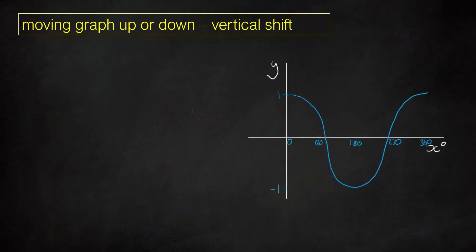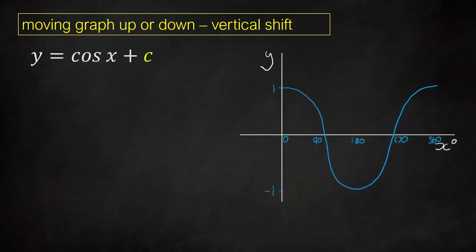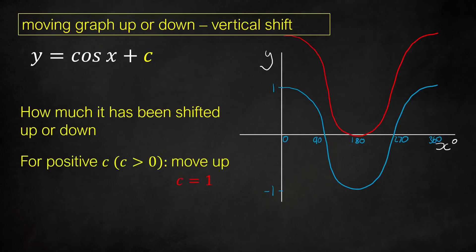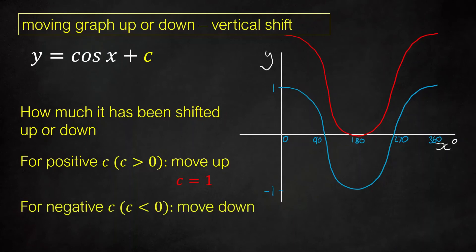To summarise vertical shifts: C is just how much it's been shifted up or down by. If C is positive we move it up — for example if C is positive 1 we move it up by 1. If C is negative we move it down — so if C is negative 1 we move it down by 1. And those are the two types of vertical transformations.